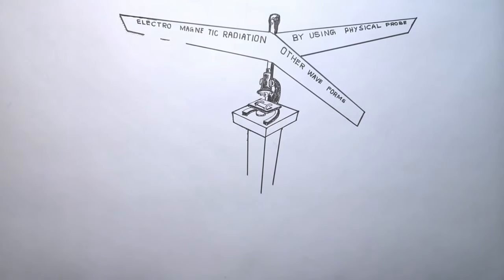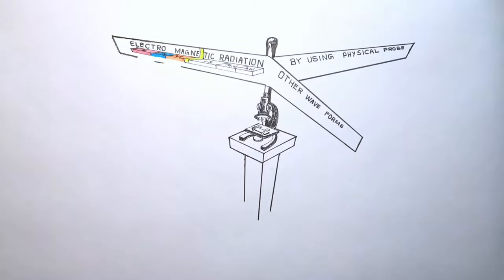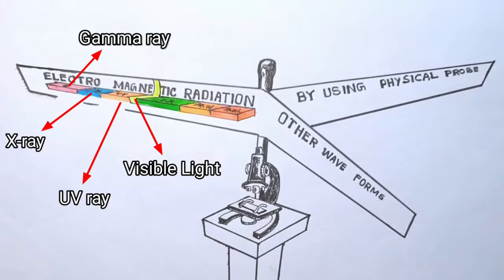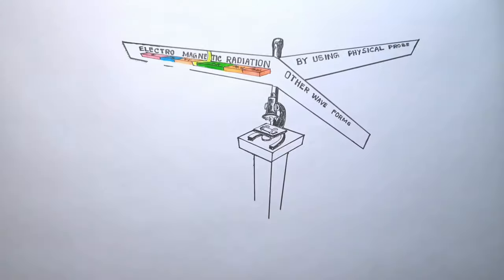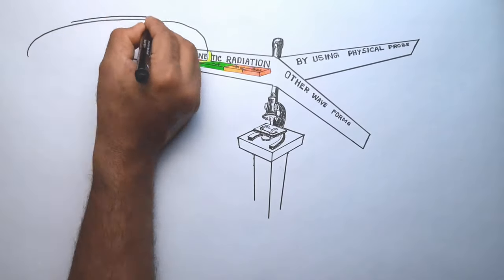Electromagnetic radiation is a form of energy that is all around us and includes many forms from gamma rays, X-rays to radio waves. But visible light ranging from 390 nm to 700 nm of the spectrum is only a small portion of the electromagnetic radiation and is the only one that our eyes are sensitive to.